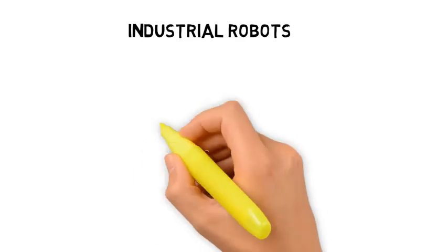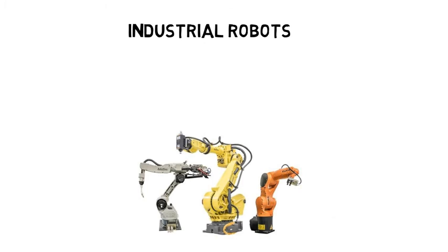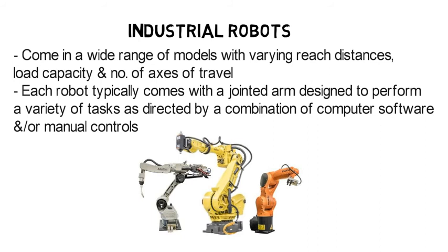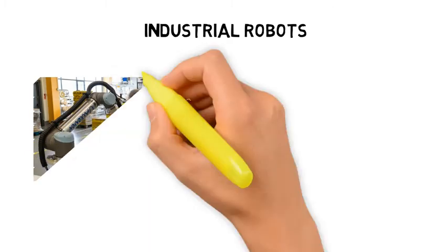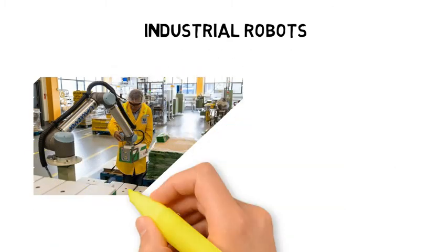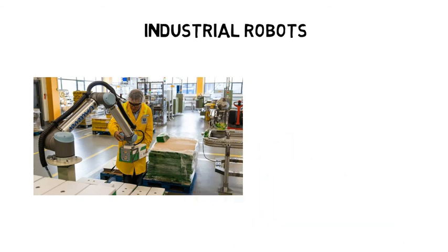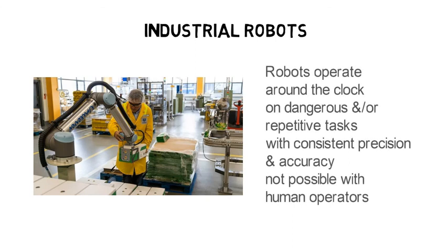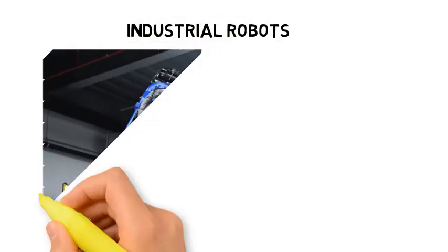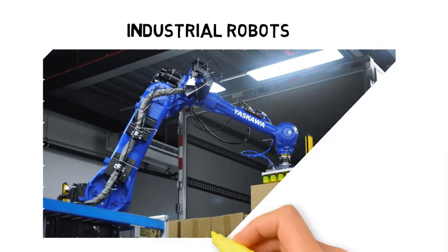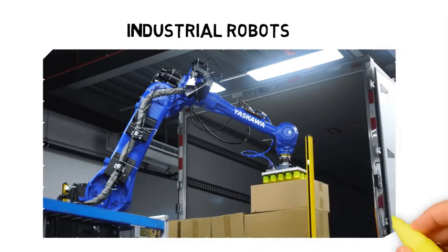Industrial robots come in a wide range of models with varying reach distances, load capacities and numbers of axes of travel. Each robot typically comes with a jointed arm designed to perform a variety of tasks as directed by computer software and manual controls, enabled by computer vision systems. Newly developed robotic arms can recognise products and perform piece picking. Industrial robots can operate around the clock on dangerous or repetitive tasks with consistent precision not possible for humans. For example, at the Unilever facility in Poland, collaborative robots, or cobots, work alongside humans packing and palletising goods at 1,100 boxes per 8-hour shift. Meanwhile, Chinese logistics robotics company Dorobot has created a robot capable of autonomously loading a container as part of a container booking, planning and loading solution, integrating warehouse management systems, customer requirements and operational needs.